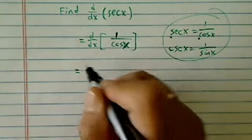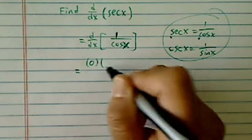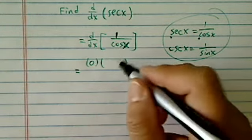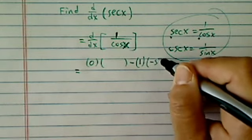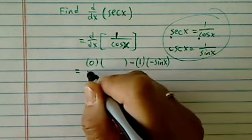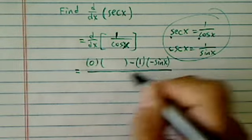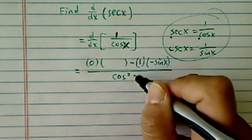We're going to take the derivative of the first one, which is 0, times the derivative of the second one, so we're not going to even bother with it. Minus 1 times minus sine x, because derivative of cosine is minus sine, equals cosine squared x.